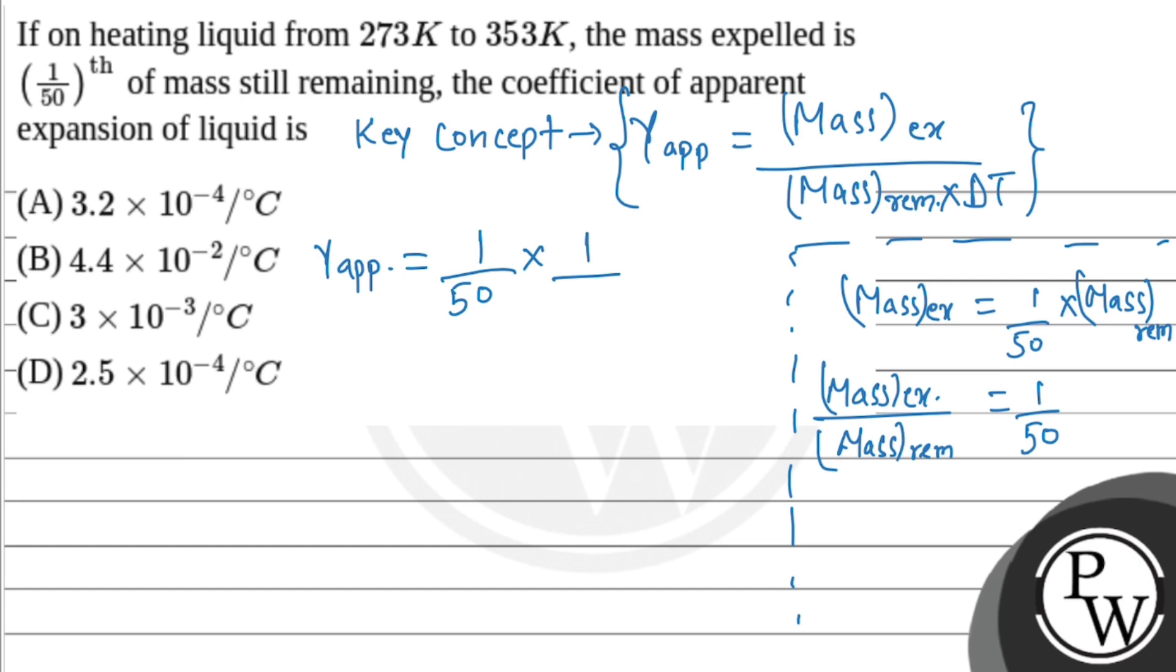So gamma apparent equals 0.25 into 10 to the power minus 3. Gamma apparent equals 1 upon 4000. This will be our final answer. That is option number 4: 2.5 into 10 to the power minus 4 per degree Celsius.